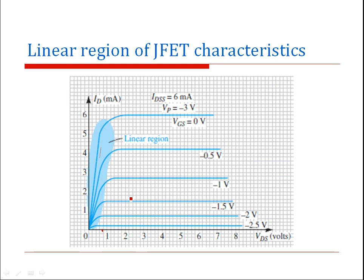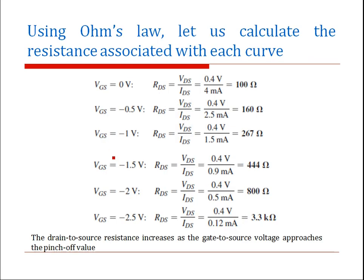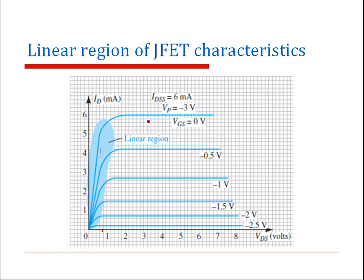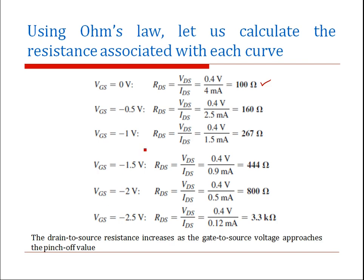As VGS is increased in the negative direction, the resistance in the linear region varies. When VGS equals zero volt, the resistance is 100 ohms. As VGS becomes more and more negative, the resistance value increases — as VGS reaches minus 2.5 volts, R_DS increases to 3.3 kilo-ohms. The drain-to-source resistance increases as the gate-to-source voltage approaches the pinch-off value.